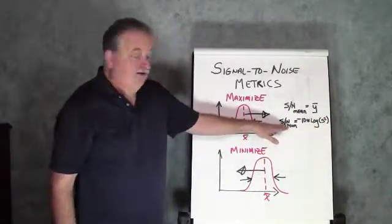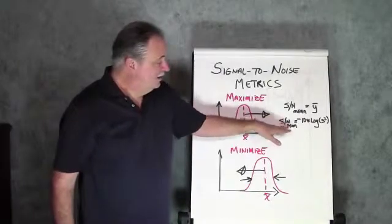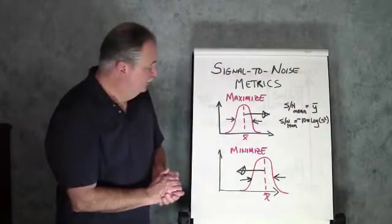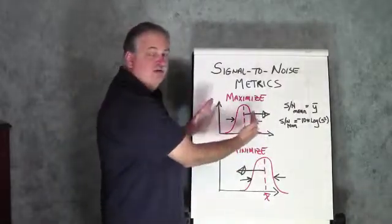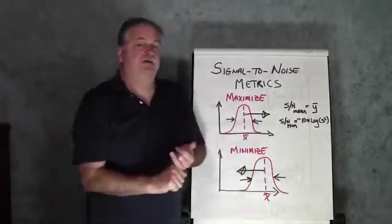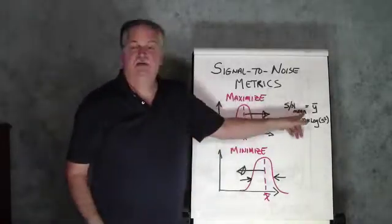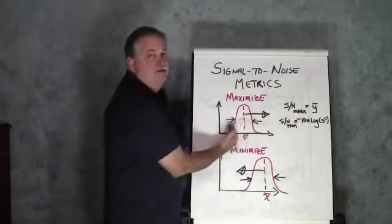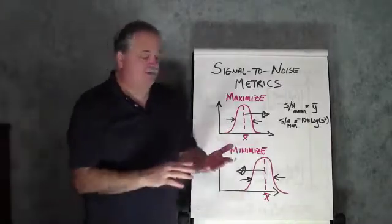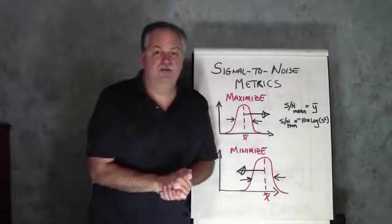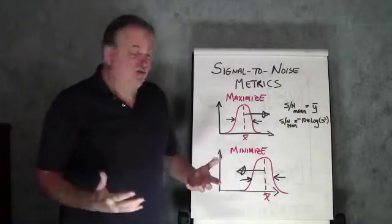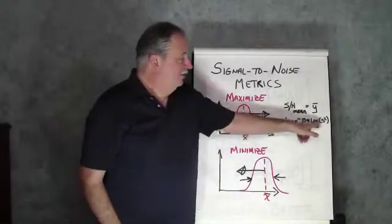So, this other standard deviation signal-to-noise metric is this SN nominal. And, what this allows us to do is to find the variables that are going to shrink the variation about the average value. So, a standard analysis of variance is going to be looking at the means. It's going to be looking at how do we adjust the location of that distribution.